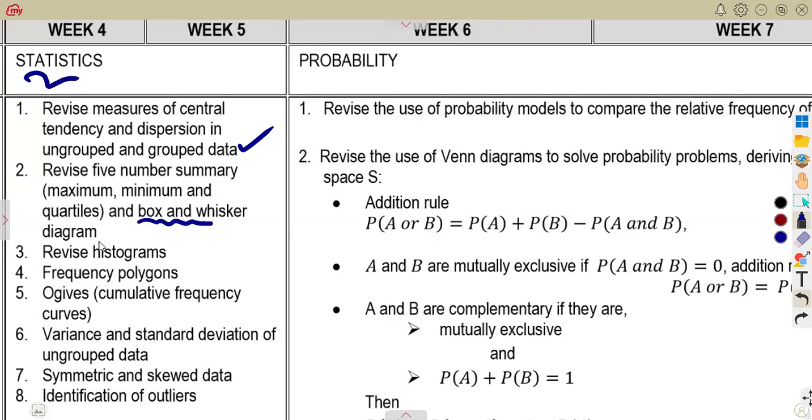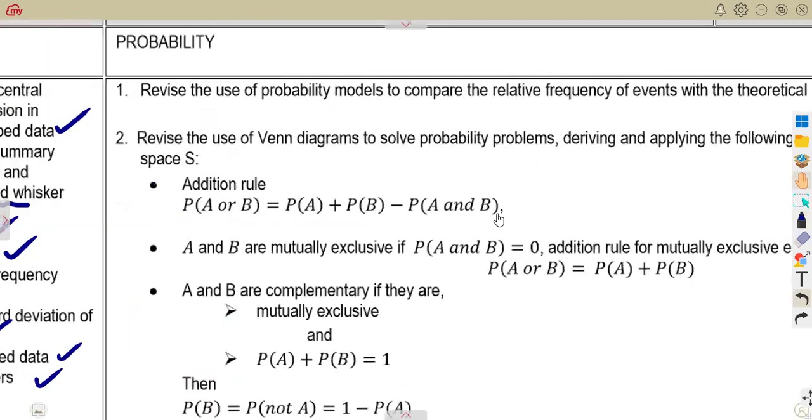And also, you must revise the box and whisker diagrams, to revise the histograms, the frequency polygons, the ogives, which is the cumulative frequency curves, and also you must work with the variance, which is the standard deviation of ungrouped data, and also to work with the symmetric and the skewed data, identification of outliers.